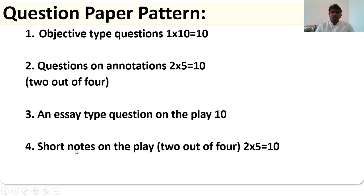Fourth section is short notes on the play. They will give you 4 short notes. They may give you the names of the characters or they may give you the incidents that have taken place in the drama. You have to explain those characters or incidents. They will give you 4 short notes, out of 4 you have to write 2. Each one carries 5 marks, that will become 10 marks. All these 4 sections will become 40 marks.